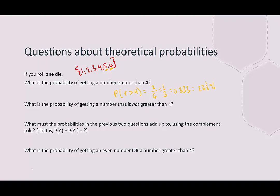What is the probability of getting a number that is not greater than four? One is not greater than four, neither is two, three, or four. The probability of something not greater than four — less than or equal to four — there were four successes out of the six outcomes. That would be two out of three, which is 0.667, or 66 and two-thirds percent.